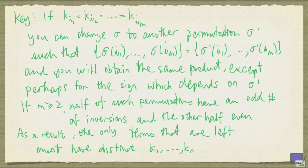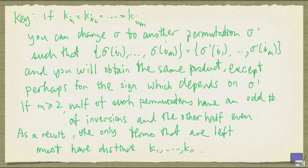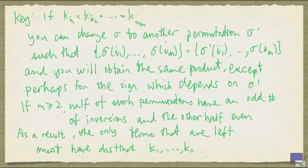Now you can change this sigma to another permutation sigma prime, in such a way that σ(i1) up to σ(im) is the same set as σ'(i1) up to σ'(im). And in a term that corresponds to sigma prime, you will be able to obtain the same product, except that the sign depends on the number of inversions in sigma prime.